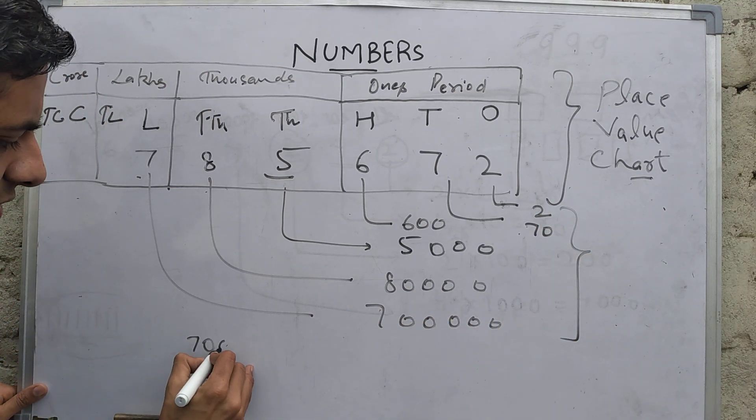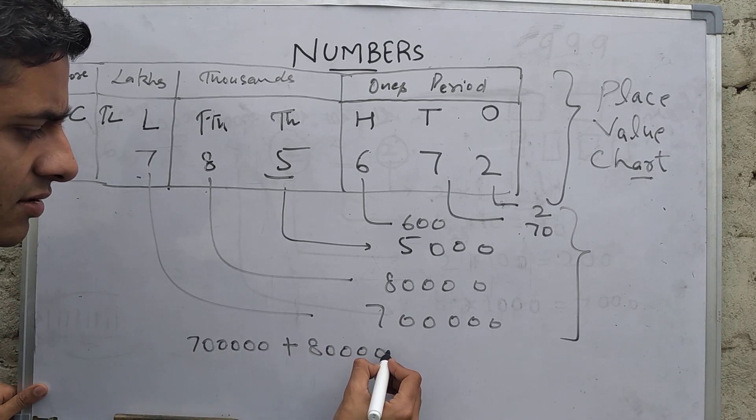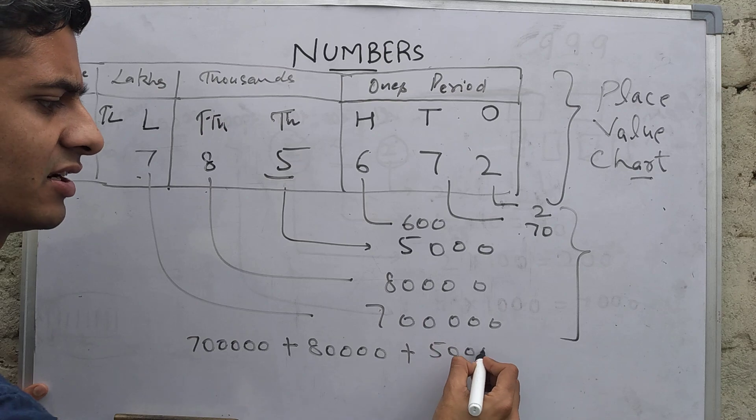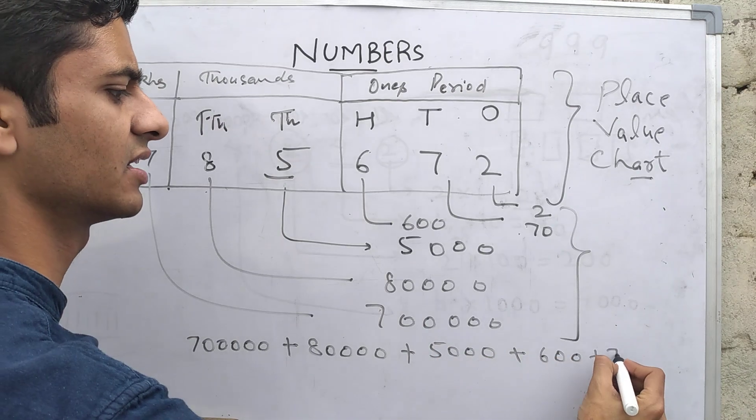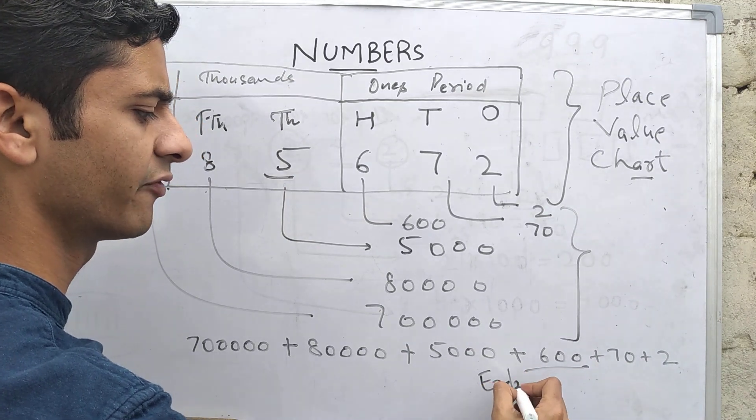And when I write it in this way: seven lakh plus 80,000 plus 5,000 plus 600 plus 70 plus 2. This is called the expanded form.